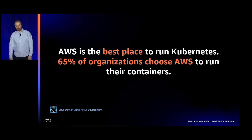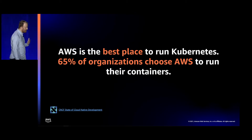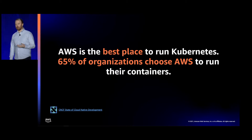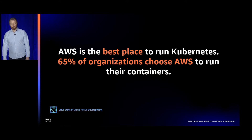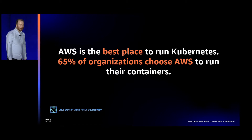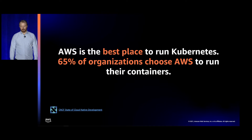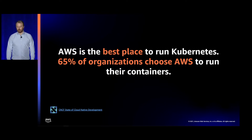I wanted to start with a statistic. I think this is a really spectacular statistic. It speaks to the core position that Kubernetes plays in AWS customers' minds and the organizations that choose to use AWS as the place to run their Kubernetes workloads. 65% of organizations surveyed by the CNCF choose AWS as the home for their Kubernetes workloads. That's just an incredible statistic, and a group that we really want to continue to serve as well as we can.